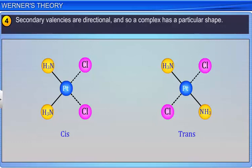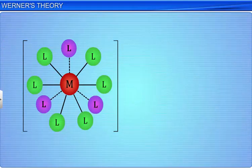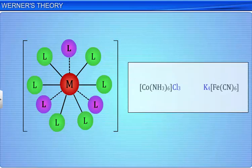To distinguish between the two types of valencies, Werner introduced the concept of using square brackets to enclose the atoms that make up a coordination complex and which are therefore not ionized.